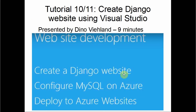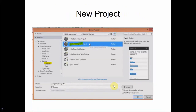Tutorial ten out of eleven is creating a Django website using Visual Studio. This shows website development using Python — you create a Django website, start out using the Django database, then configure MySQL on Azure, and finally deploy it to Azure Websites. This takes about nine minutes in the video. If you have the samples downloaded, you'll see the Django web project that allows you to take polls, such as 'What's your favorite season?' as an example.